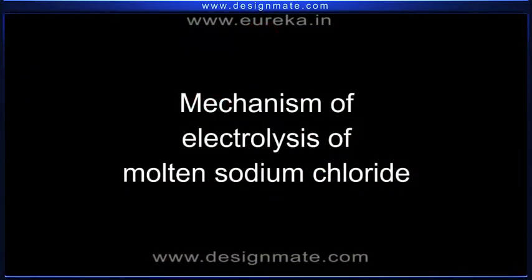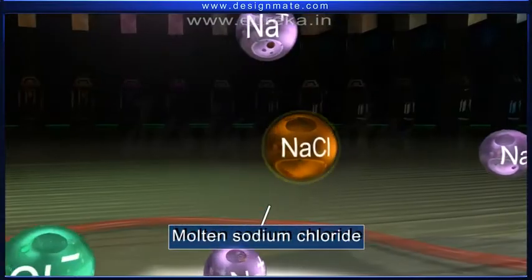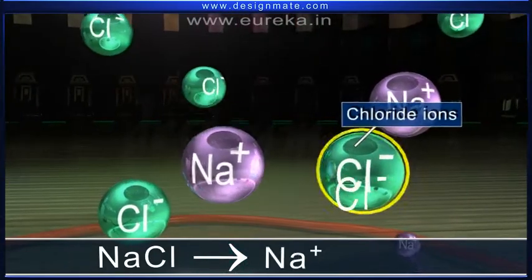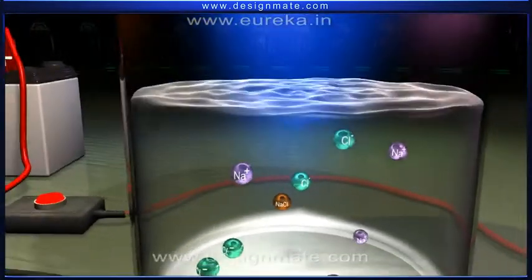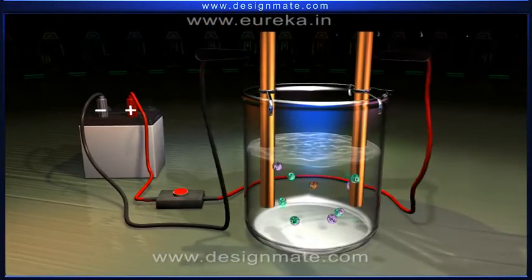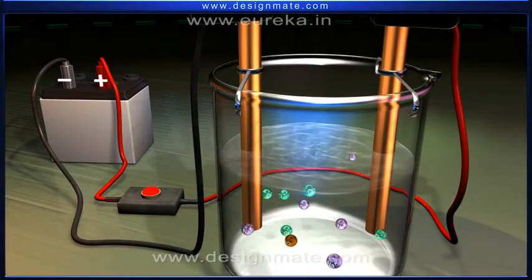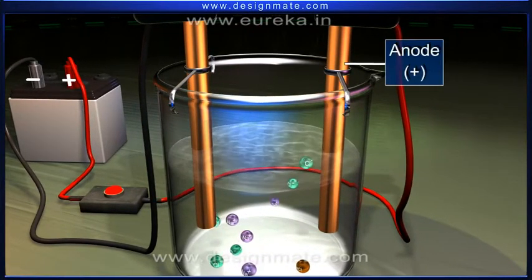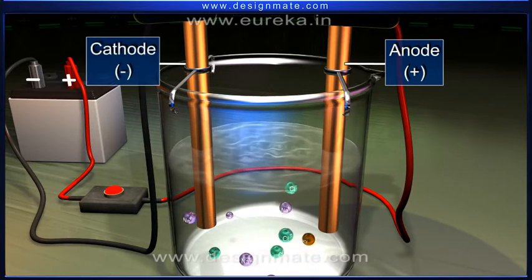We will now study the mechanism of electrolysis of molten sodium chloride in detail. In molten state, sodium chloride exists as sodium ions and chloride ions. These ions are in continuous motion. Dip two metal electrodes in molten sodium chloride, connected to the positive and negative terminals of a battery. The electrode connected to the positive terminal is called the anode, while the one connected to the negative terminal is called the cathode.